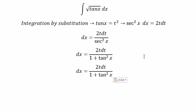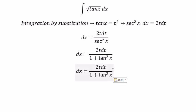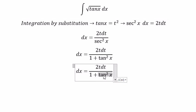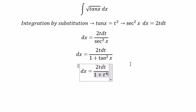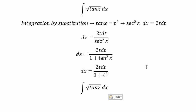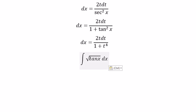Next, we know that tan squared x is t squared, and tan x is also t squared. If we want tan squared x, we need to change t to the power of 4. For tan x, we put t squared.